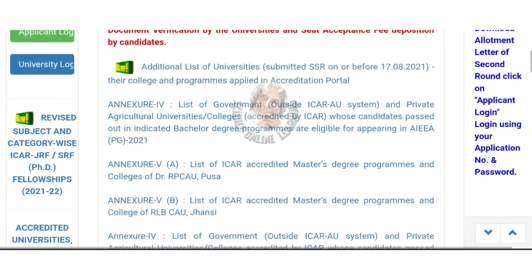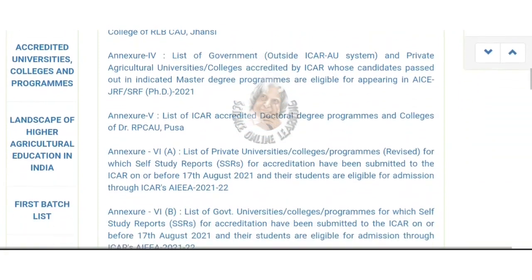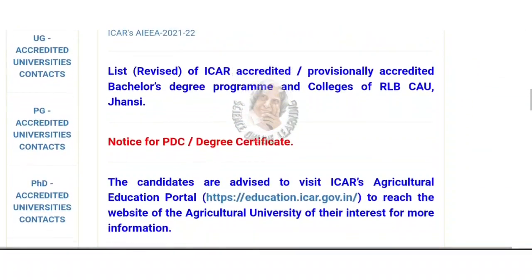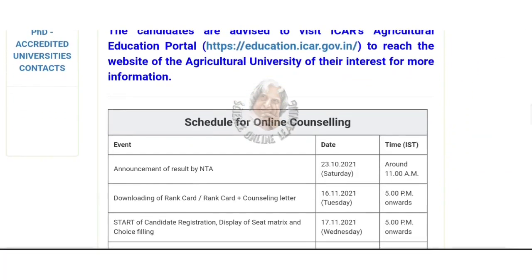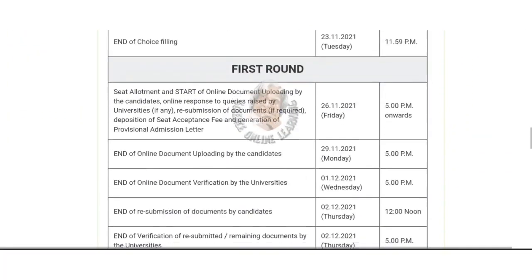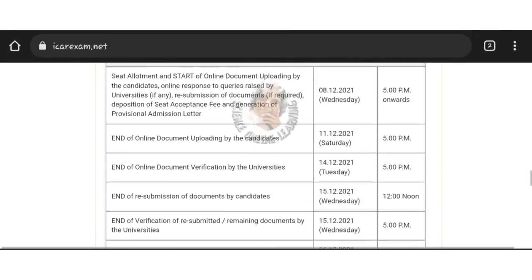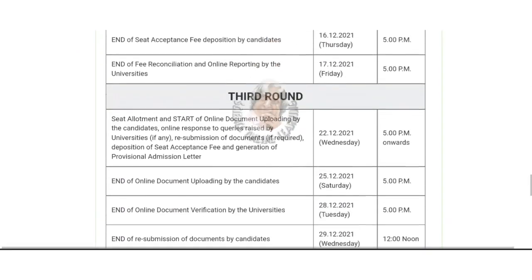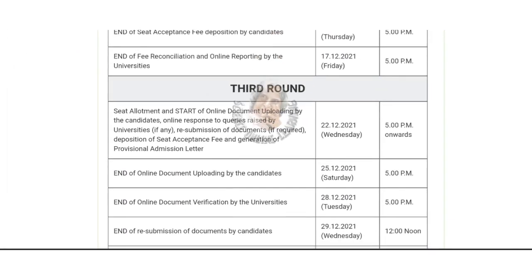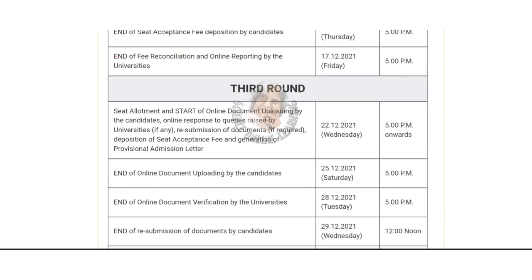The third round is already over here. If you look at the second round, you have to request a fee refund for the second round — that is 23 or 24. My third round is 22. But now we have to go on.